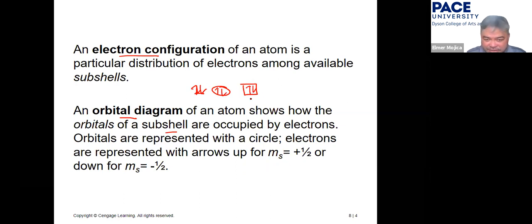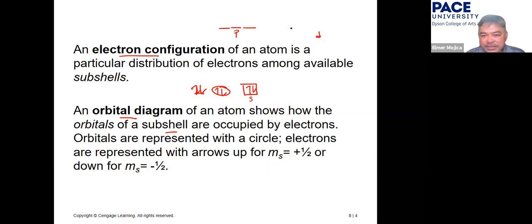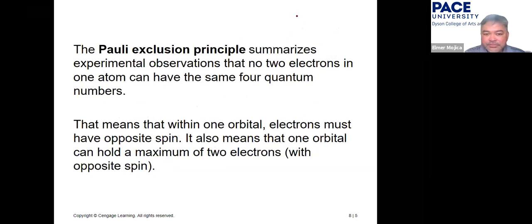For the s subshell you have one orbital, for the p orbital you have three, and for the d orbital you have four subshells.